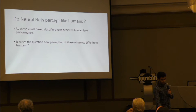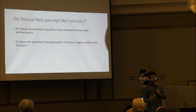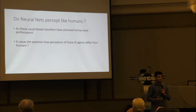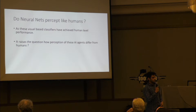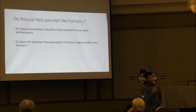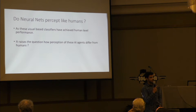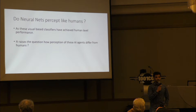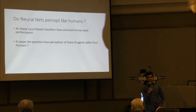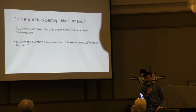Machine learning is basically based on the concept that machines think like humans. Especially in visual computing, when you have facial detectors and self-driving cars, it really begs the question: how does the computer look at images, and how are they different in perception from how we look at objects?